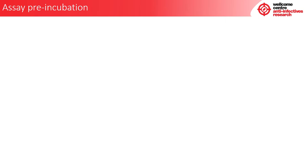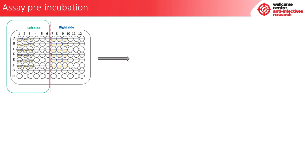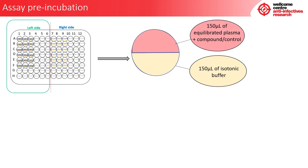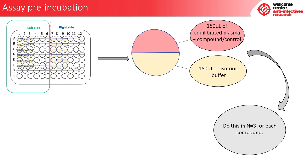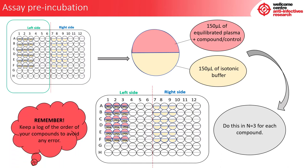Now we are going to carry out the assay pre-incubation. On the left-hand side, also known as the sample side of the dialysis block, we have 150 microlitres of isotonic buffer in the bottom chamber of each well. Into the top chamber of each well we are going to add 150 microlitres of equilibrated plasma and compound or control into the appropriate wells, in an N of 3 for each compound. For example, A1 to A3 is compound 1, B1 to B3 is compound 2, and so forth. Remember to keep a log of the order of your compounds to avoid any error.